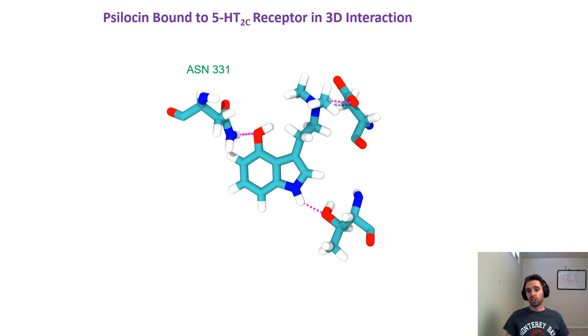The first hydrogen bond interaction is with asparagine 331, and this sits at 1.95 angstroms. A hydrogen bond between a ligand and a receptor will usually sit between 2.8 and 3 angstroms. That's a pretty ideal bond length for this nice, beautiful hydrogen bond, so to speak.